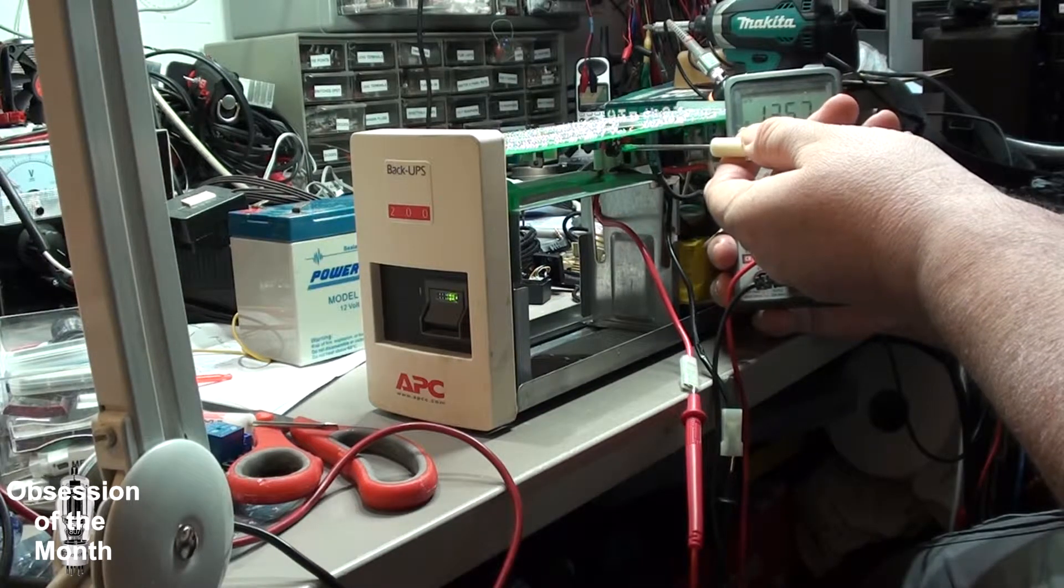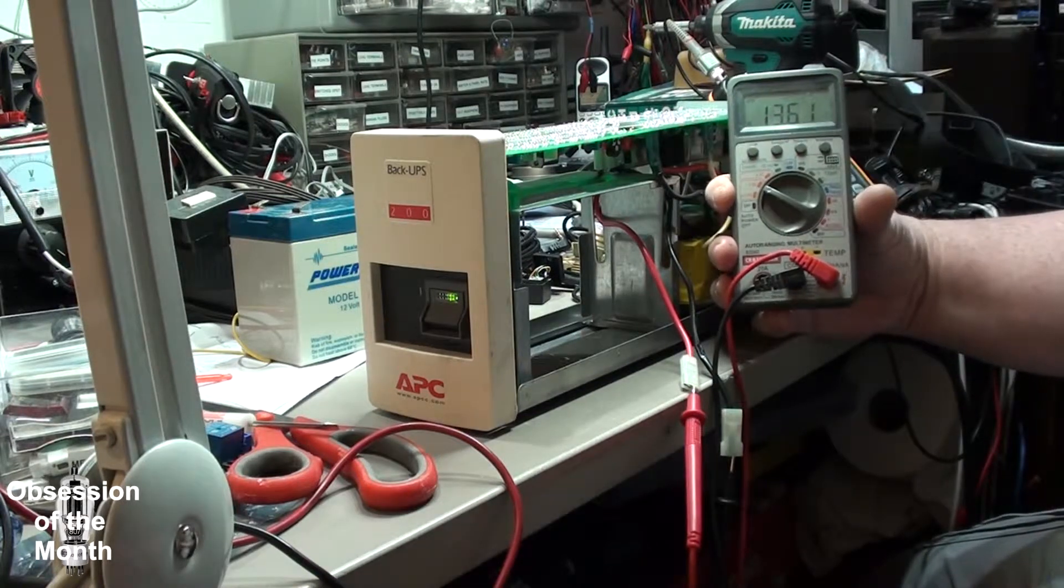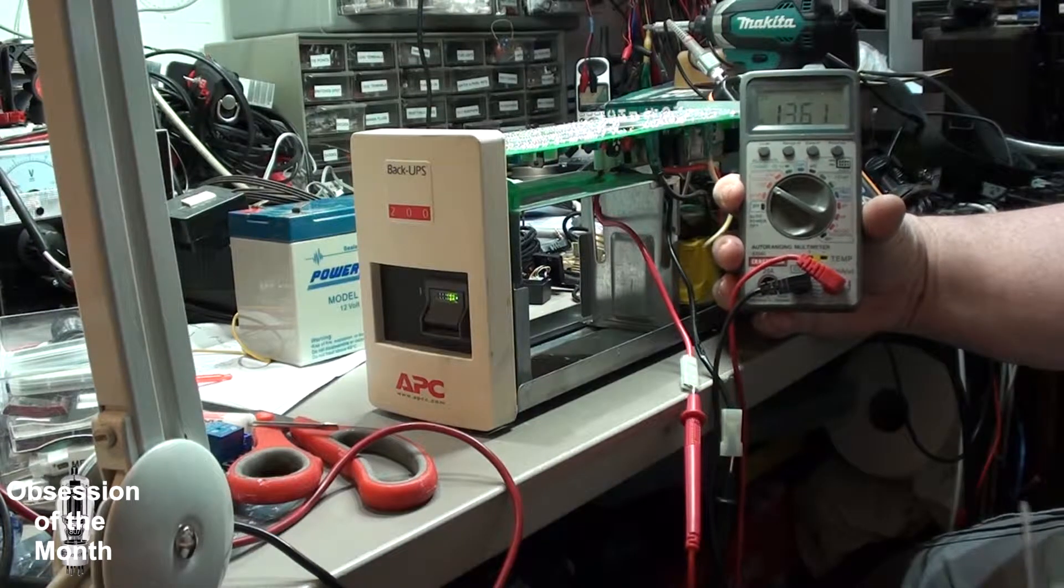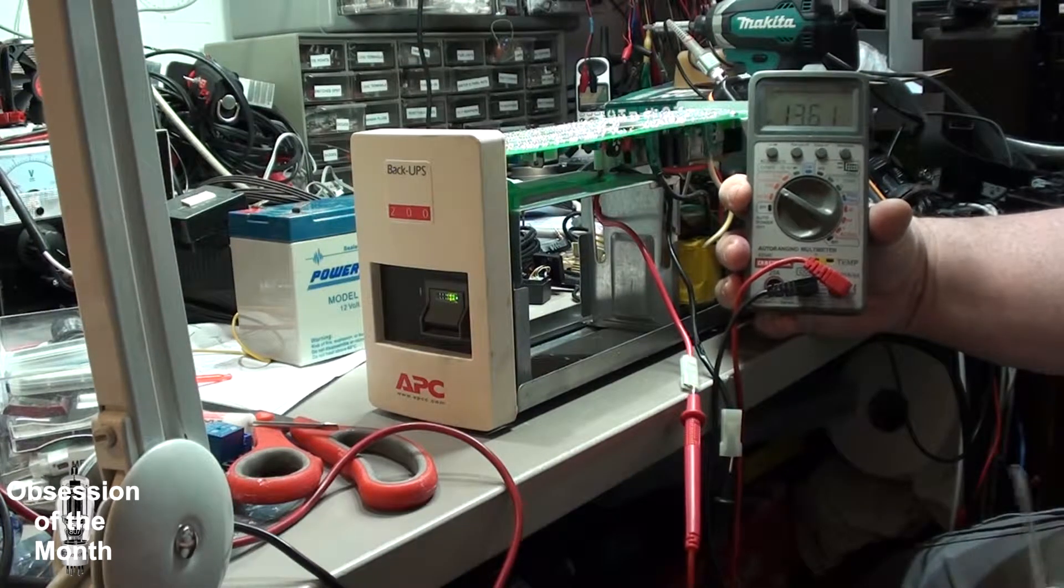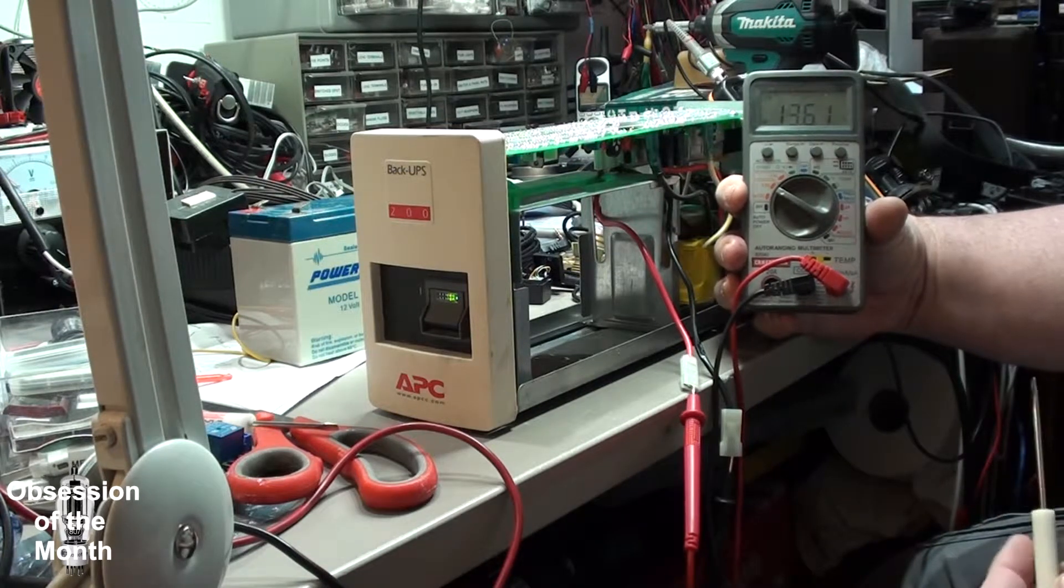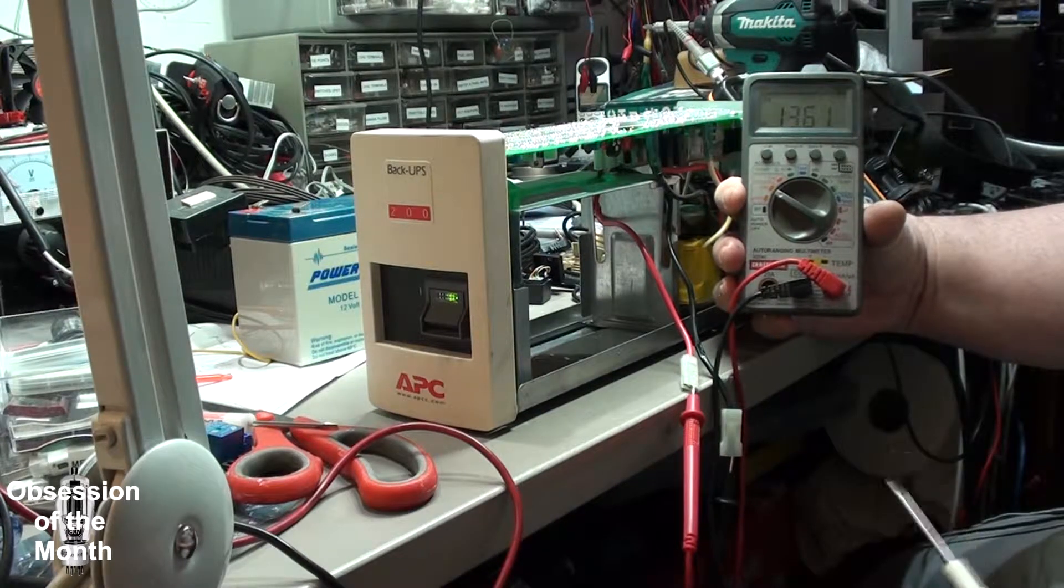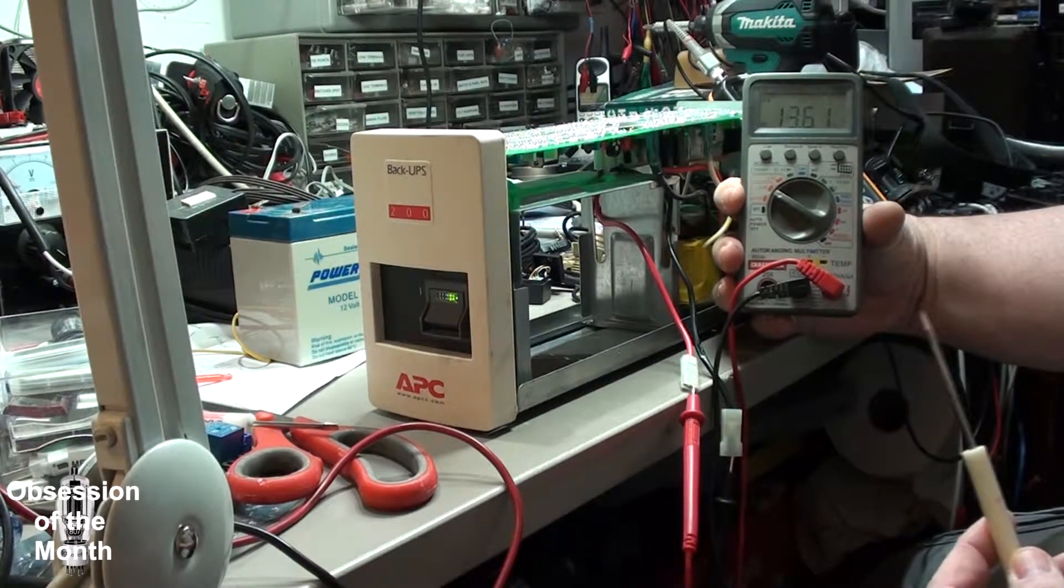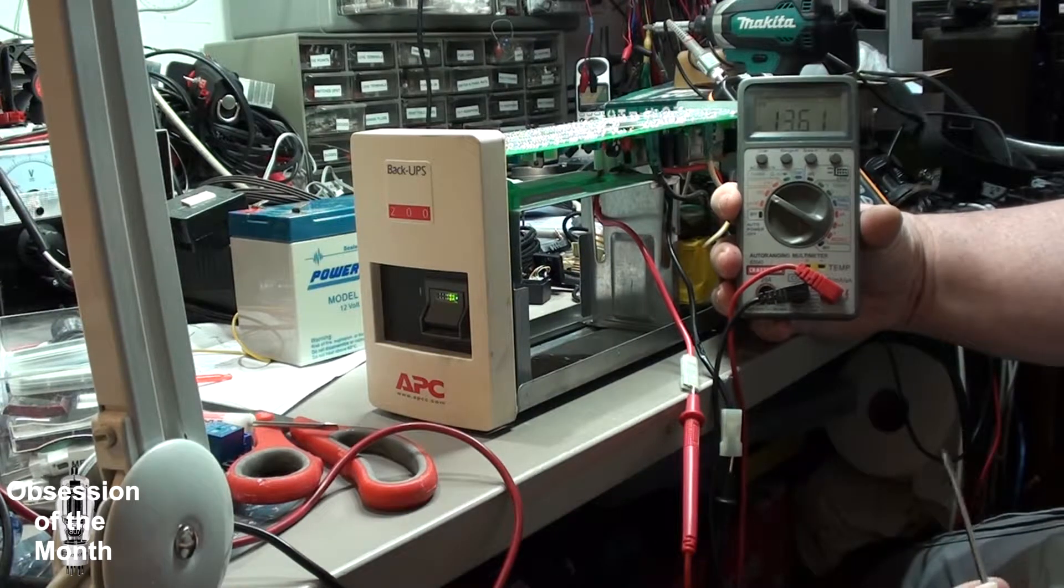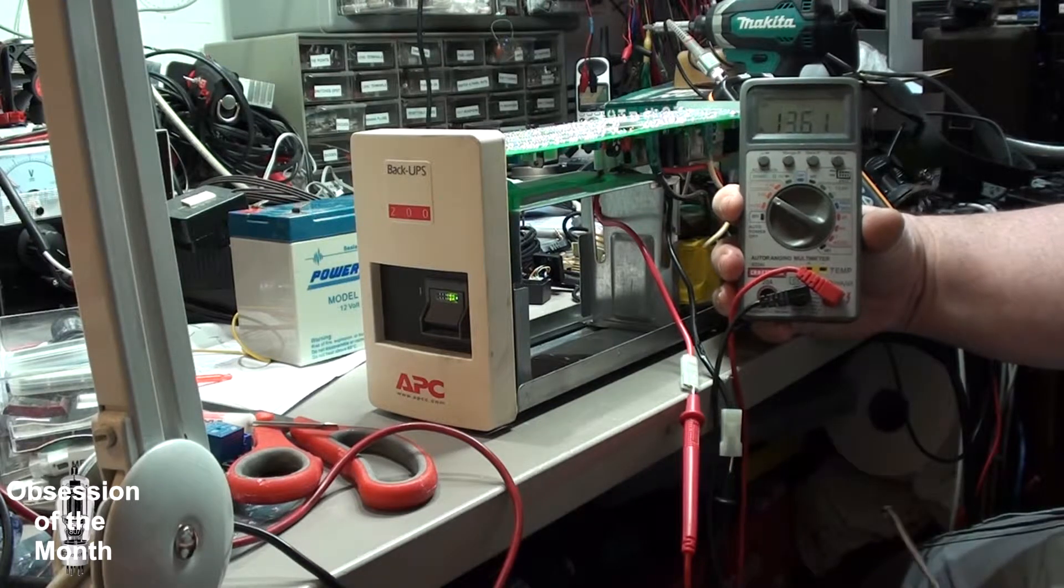I'm actually going to put this a little bit in the middle. Normally I would set it to like maybe 13.5, but from what I've read, these don't use a voltage regulator and so your voltage will change based on your line voltage. My line voltage can change anywhere from 115 all the way up to 125.